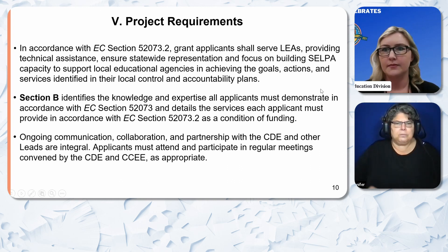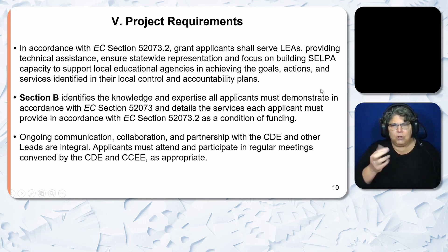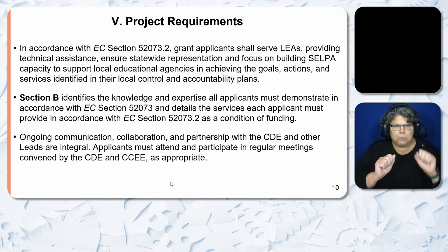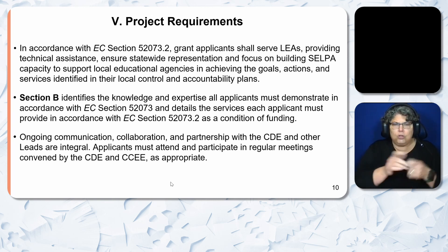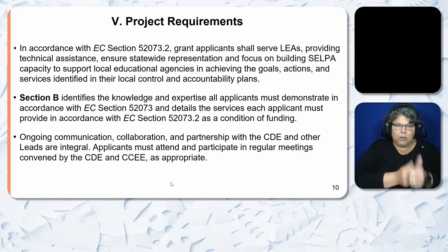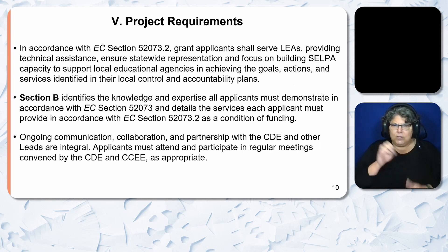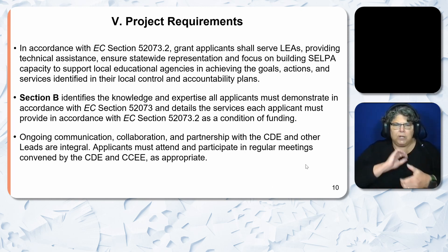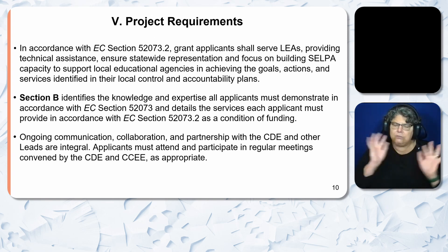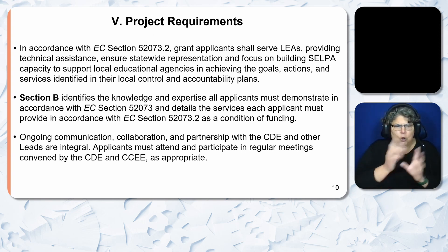Section 5, Project Requirements: In accordance with EC Section 52073.2, grant applicants shall serve local education areas providing technical assistance, ensure statewide representation, and focus on building special education local plan area capacity to support local and educational agencies in achieving the goals, actions, and services identified in their local control and accountability plans. Ongoing communication, collaboration, and partnership with the CDE and other leads are integral. Applicants must attend and participate in regular meetings convened by the CDE and CCEE as appropriate.